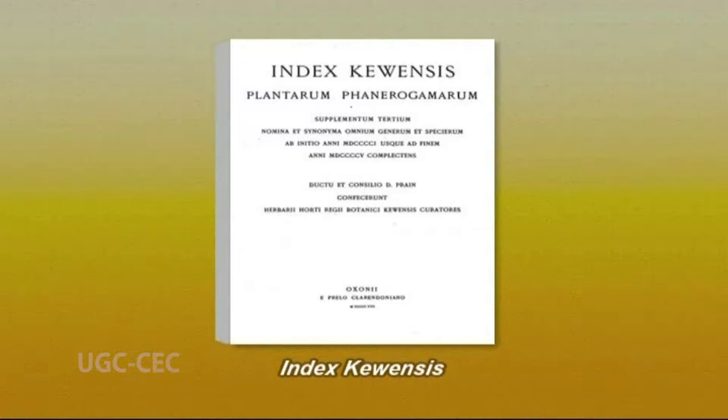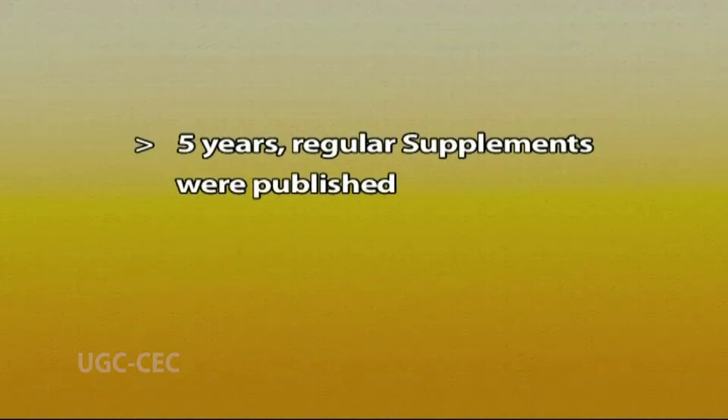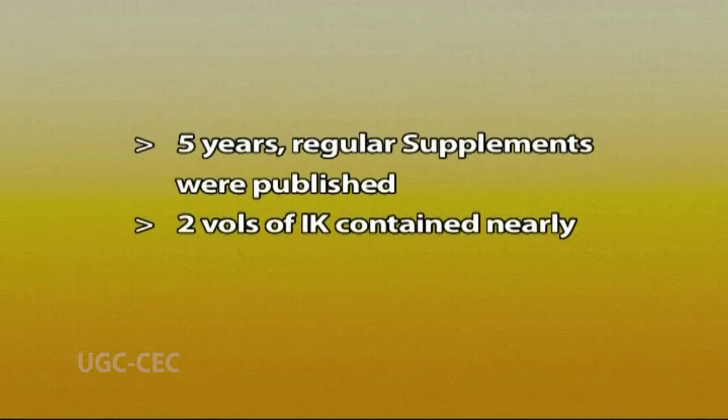Since the time of Darwin, generations of biologists have found Index Kewensis an indispensable source for botanical research. It was first published in two original basic volumes from 1893 to 1895, covering names published between 1753 and 1885. After that, regular supplements were published every five years. The basic two volumes of Index Kewensis contained nearly four million scientific names, and some six thousand additional names are added annually, with hard copy supplements published every five years.